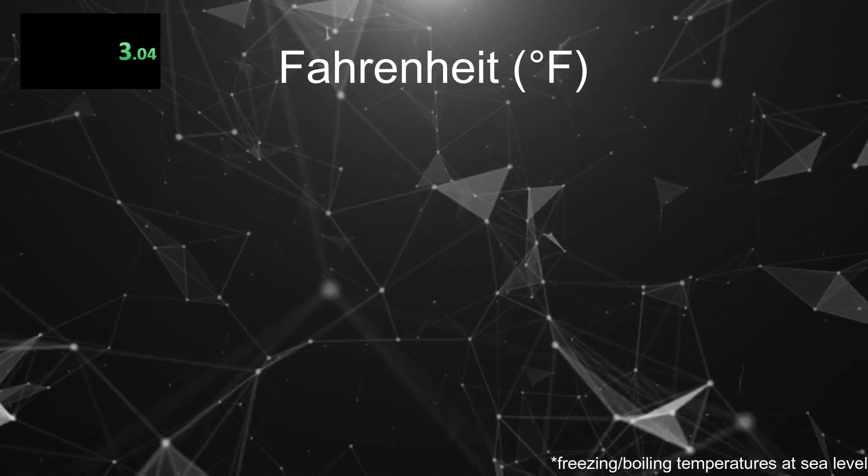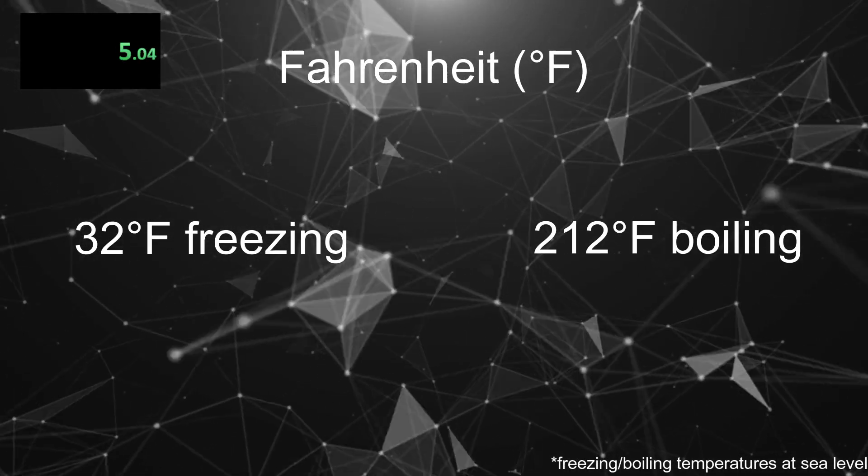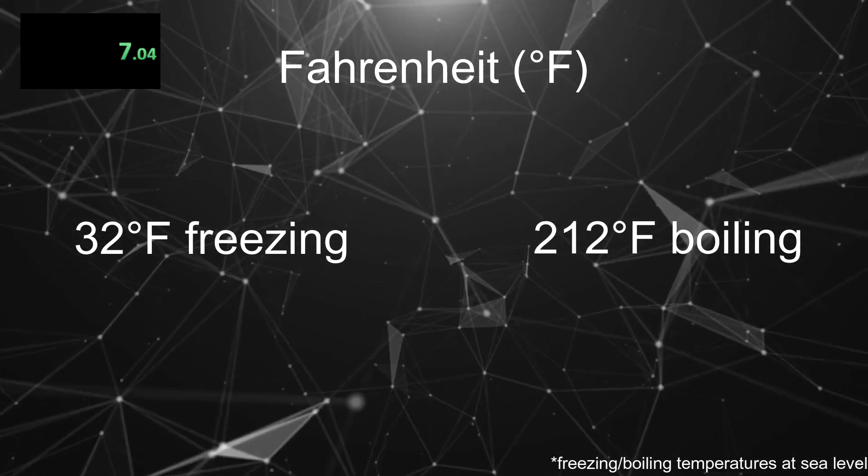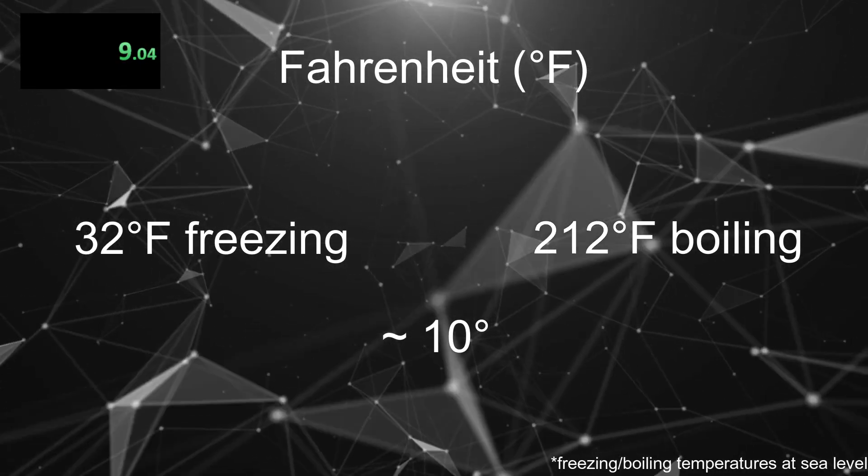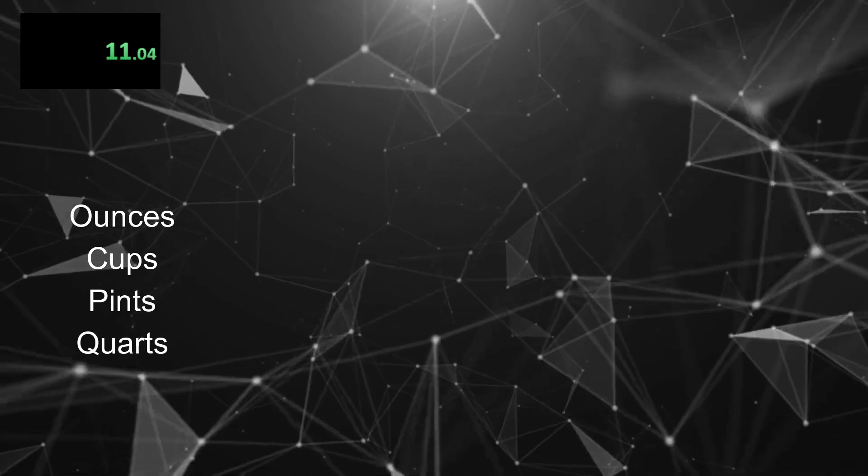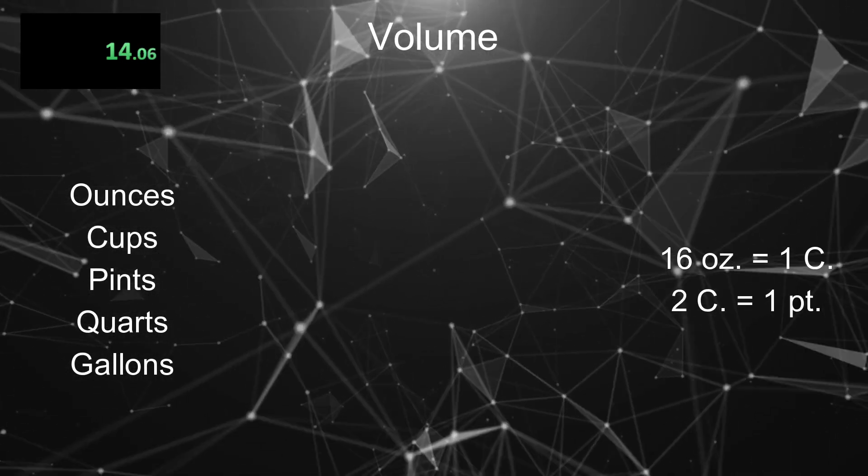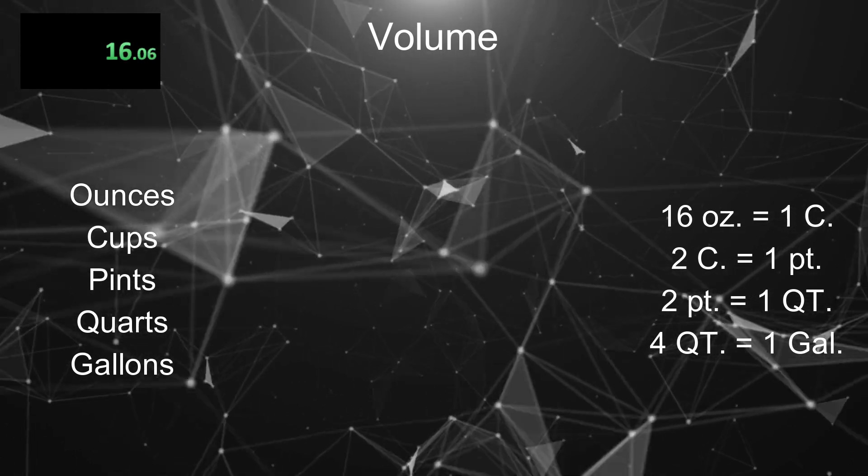The same thing with the other way of measuring anything in the imperial system. In fact, I'm going to do a speedrun. Outside of length, we have Fahrenheit, which is used to measure temperature. 32 degrees Fahrenheit is freezing and 212 degrees Fahrenheit is boiling. Good luck trying to guess how hot or cold it is outside within 10 degrees. Ounces, cups, pints, quarts, and gallons. These are used to measure volume. There are 16 ounces in a cup, 2 cups in a pint, 2 pints in a quart, and 4 quarts in a gallon.